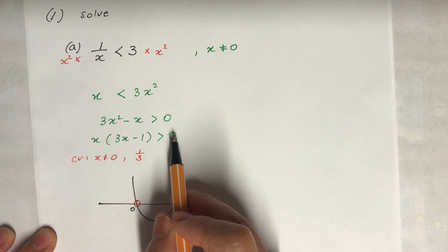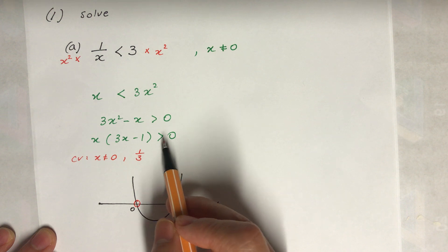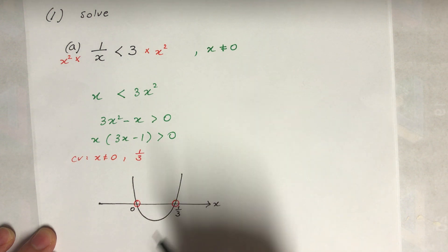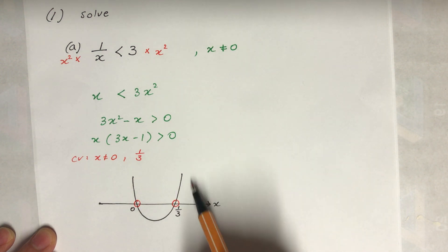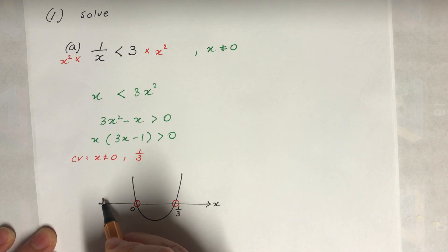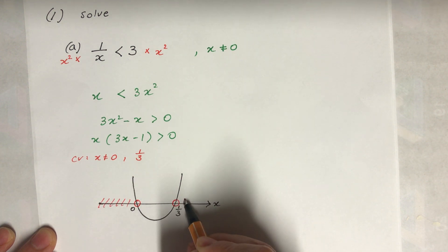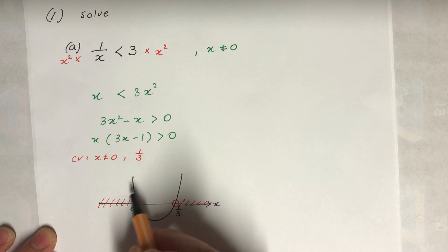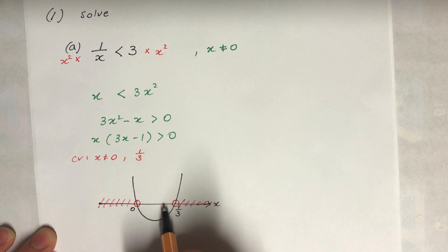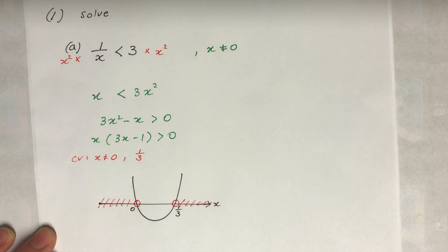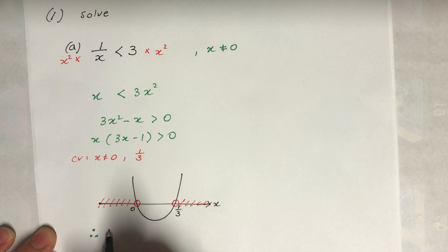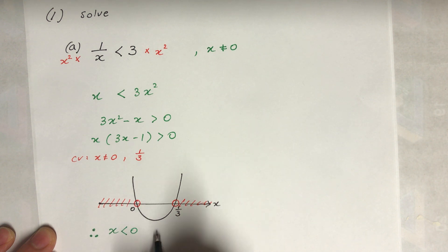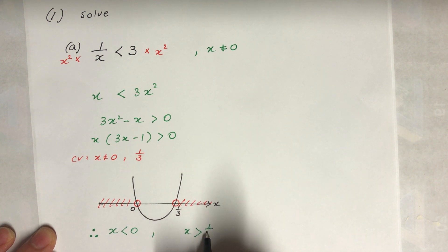The inequality says the expression is bigger than zero, so we want the parts of the parabola above the x-axis. The x values between 0 and 1/3 give values below zero, so those are excluded. The final answer is: x < 0 or x > 1/3.